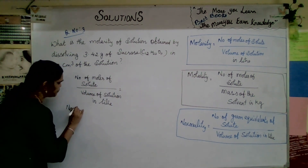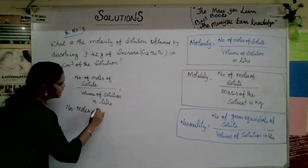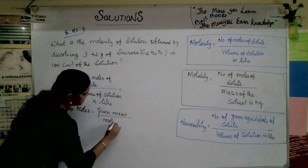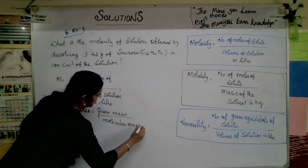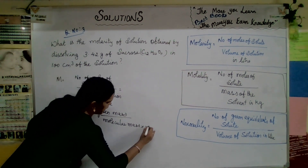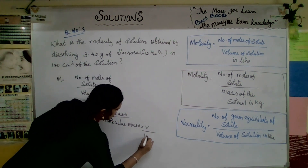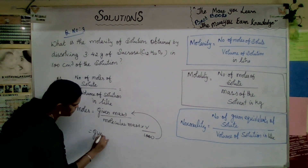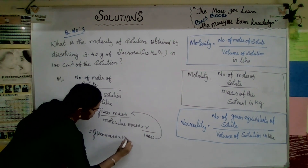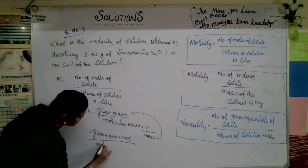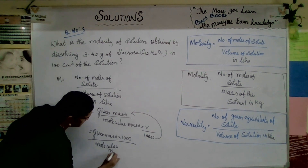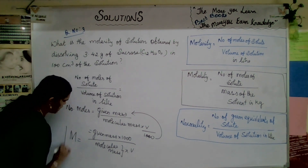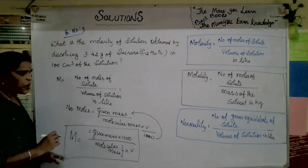Number of moles equals given mass divided by molecular mass. So molarity equals given mass divided by molecular mass, multiplied by 1000 over volume in mL. That simplifies to: given mass × 1000 divided by molecular mass × V. This is the molarity concept.